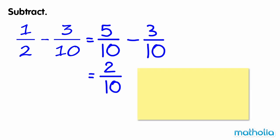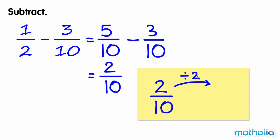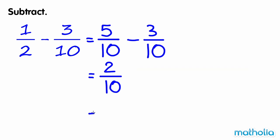We can simplify 2 tenths by dividing the numerator and the denominator by 2 to give 1 fifth. So 1 half minus 3 tenths equals 1 fifth.